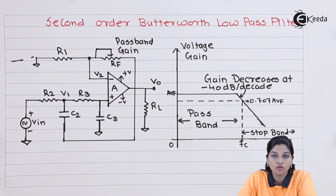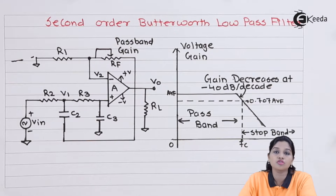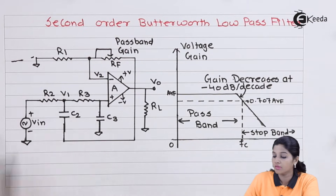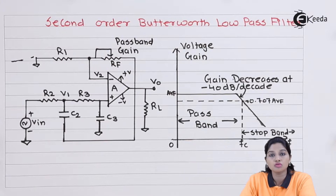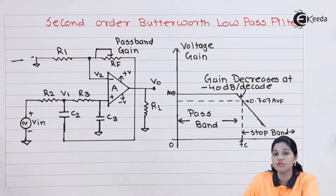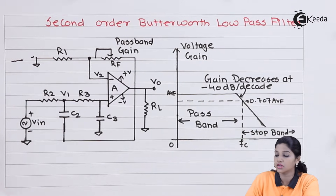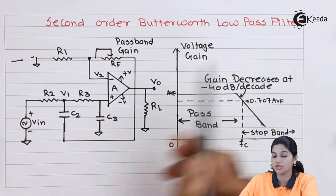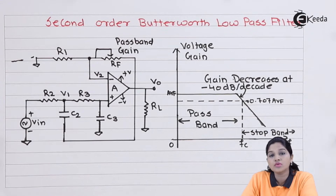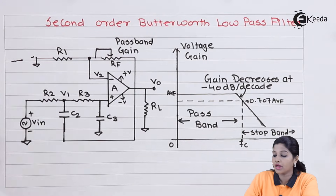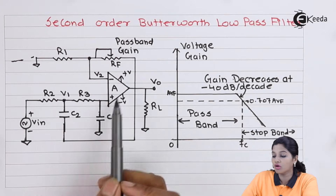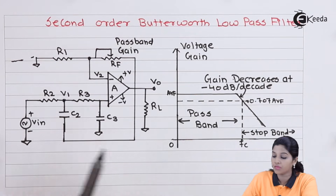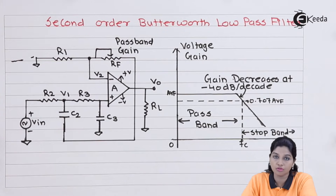The circuit of the second order Butterworth low pass filter can be obtained by including an additional RC network in the first order Butterworth low pass filter. In the circuit diagram, R2 and C2 form the additional RC network. When we include R2 and C2, the first order filter is converted into a second order Butterworth low pass filter. The cutoff frequency is now determined by R2, R3, C2, and C3. The op-amp is used in non-inverting configuration, as the input is applied to the non-inverting terminal.